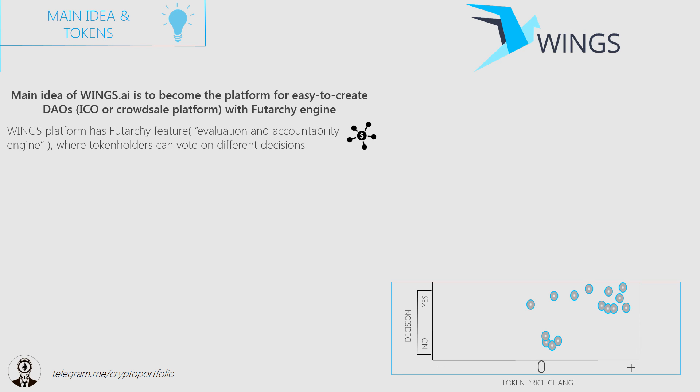Here is an example of the choices the forecasters from Winx can make. From this example, we can see that the decision to redesign the site is forecasted to increase the price of tokens, so the project's founders have to take this into account and redesign the site. This is how, using the so-called Swarm Intelligence, the community will be able to predict price change as a result of a certain event.